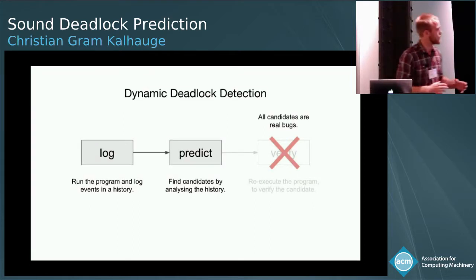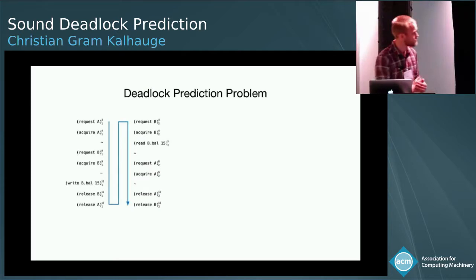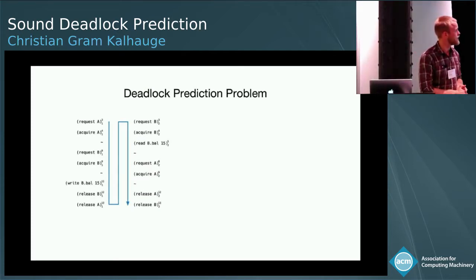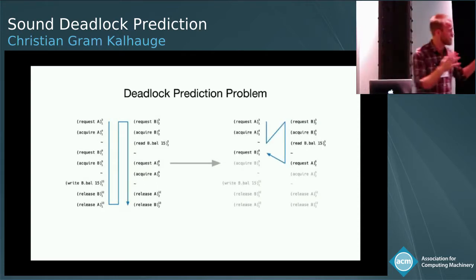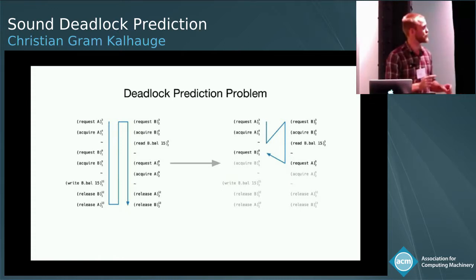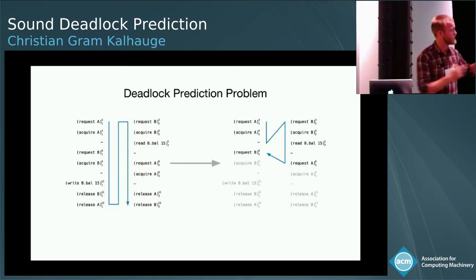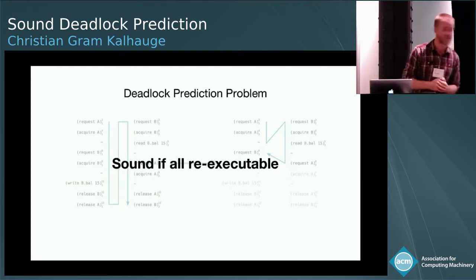Our whole idea is to take a page out of the data race detection business and ask: why do we have to re-run it all? Couldn't we just predict the candidates soundly? So if all the candidates are real bugs, we don't have to re-execute. The deadlock prediction problem would then be: take the history we got from running the program that didn't fail, and through some solving, end up with some other history that actually contains a bug. The important part — and this is what makes a prediction system sound — is that every history that is predicted is re-executable in the old history.